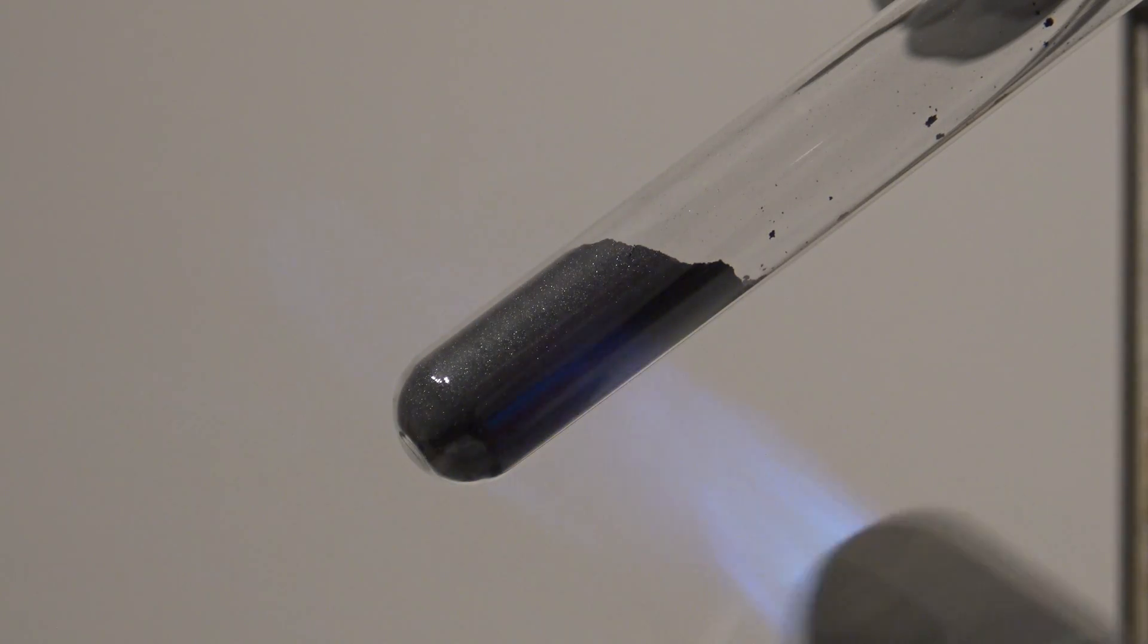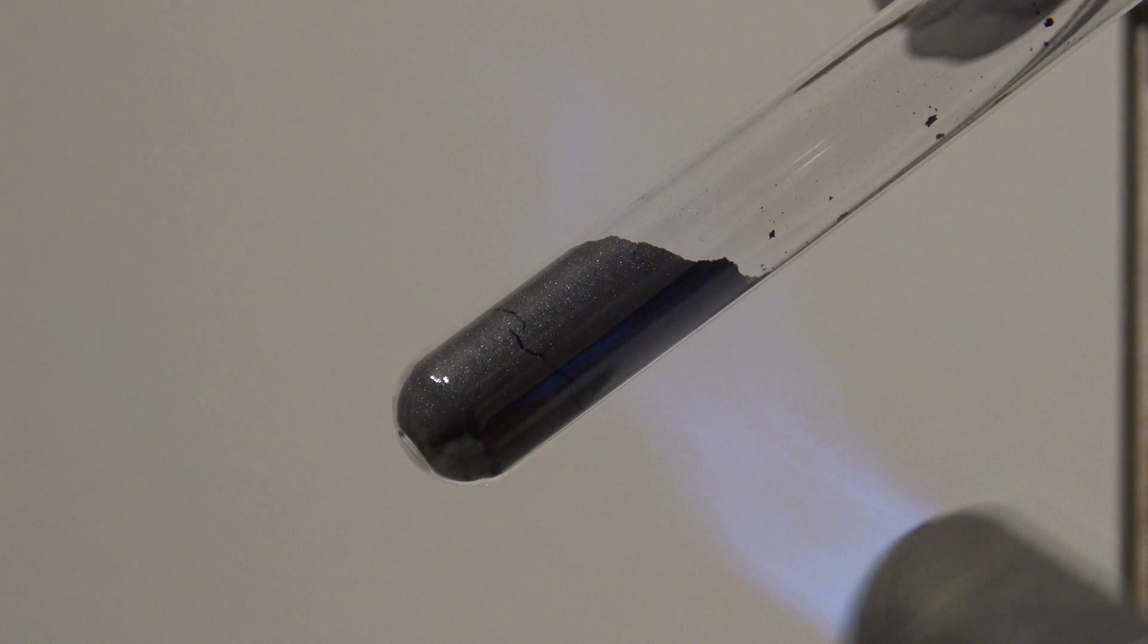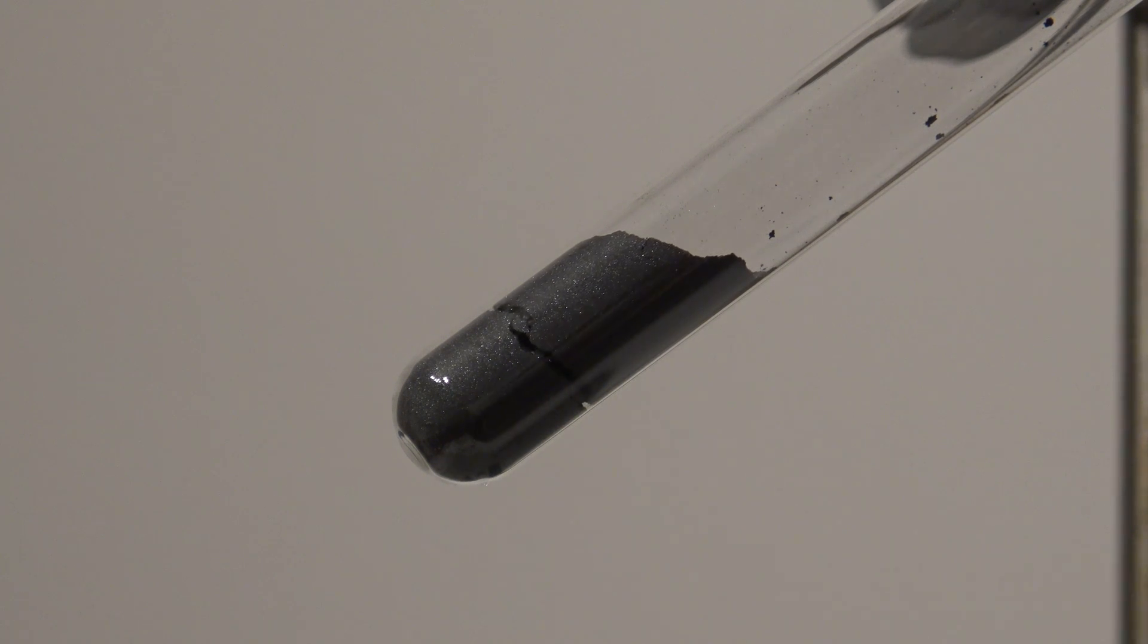Then the test tube was heated strongly with a burner until a reaction took place. Especially in the beginning, pockets of gas began to form slowly. By tapping the tube with a spatula, the pockets in the mixture were removed.